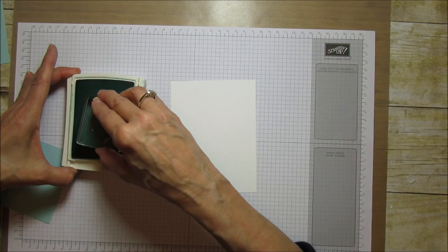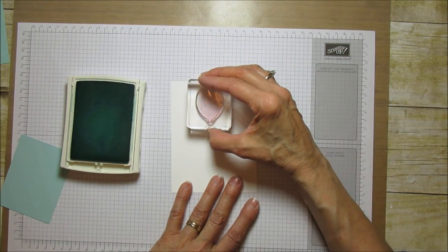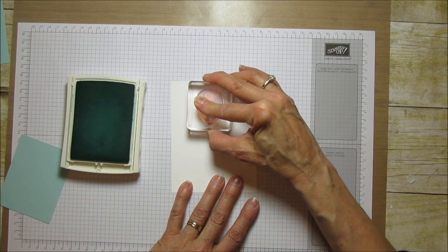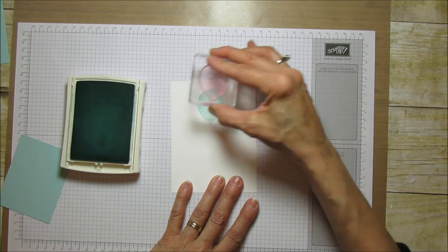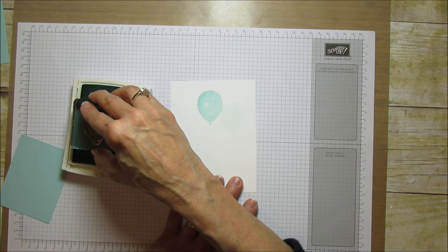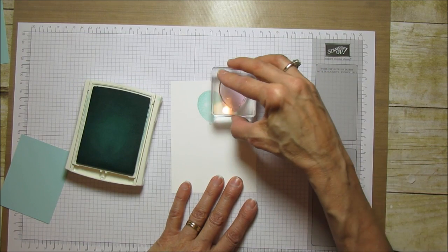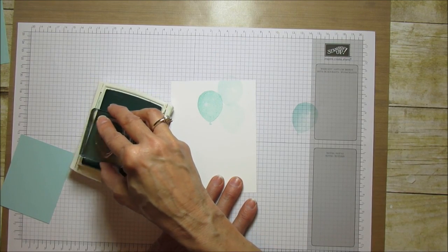I'm going to do one that's dark and it's in the center. Then I'm just going to start stamping some other lighter ones, so I'll stamp on off and then I'll stamp some lighter and darker different variations of the same color.